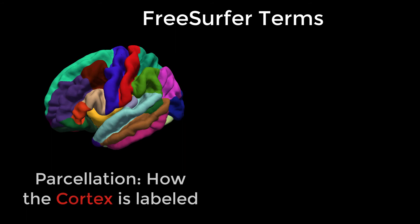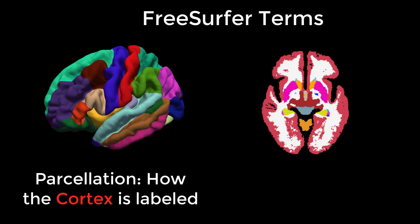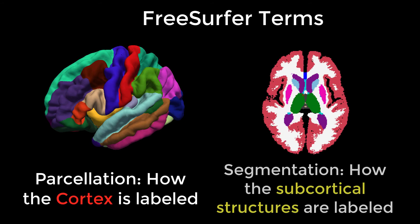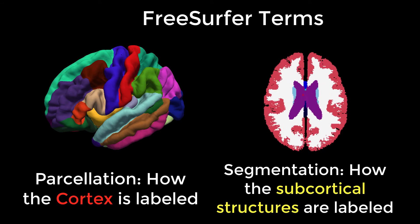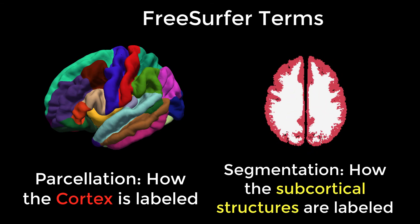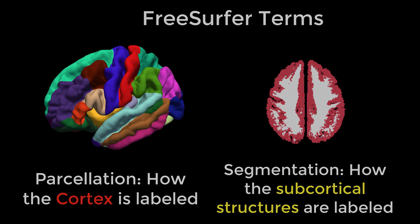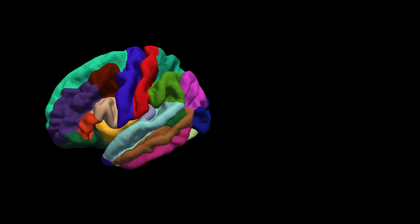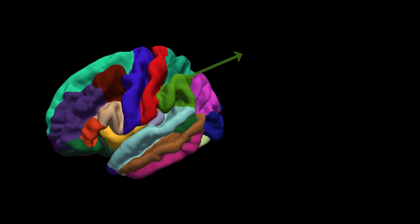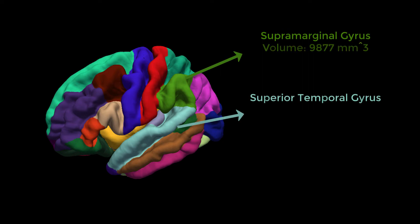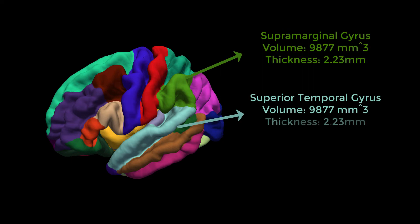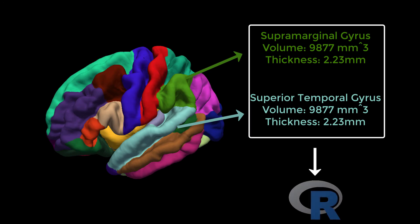In FreeSurfer terms, the cortex is parcellated according to atlas boundaries, and the white matter and subcortical structures are segmented into distinct regions. We'll use these terms later when discussing FreeSurfer output files. For each of these parcellations and segmentations, different numbers are calculated, such as thickness and volume. You can export these to tab-delimited text files and then analyze them.